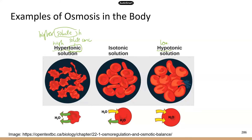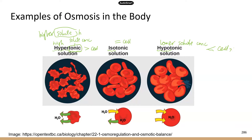A hypotonic solution has a lower solute concentration than what's in our cells. And looking at the picture in the middle — isotonic — 'iso' means equal, so an isotonic solution has the same concentration of solute as our cells. So: greater than cells, equal to cells, and less than cells.